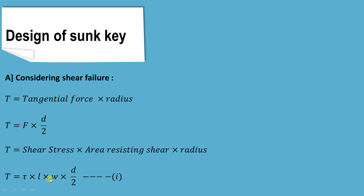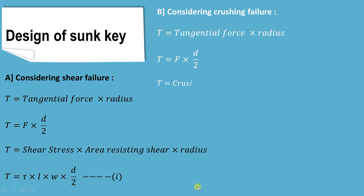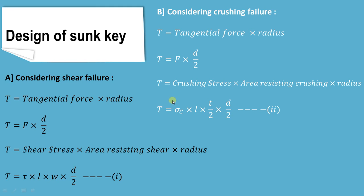Similarly, considering the crushing failure, torque is again tangential force multiplied by radius, F into D by 2. Here force is crushing stress into area resisting crushing. Crushing stress is sigma_c, area resisting crushing is L into T by 2, and radius is D by 2. So our second equation is: Torque = sigma_c × L × (T/2) × (D/2). In the design of a key there are two types of failure: shear failure and crushing failure.